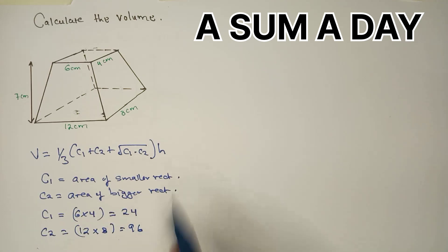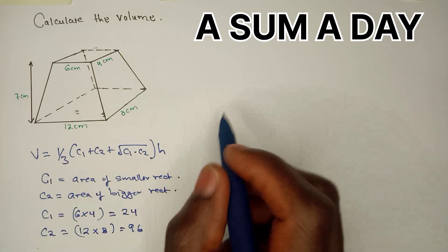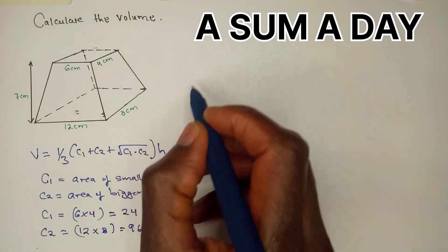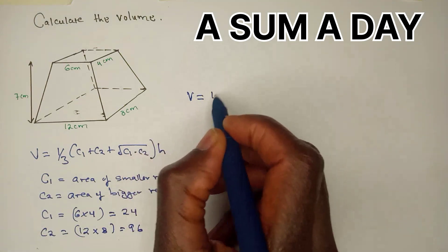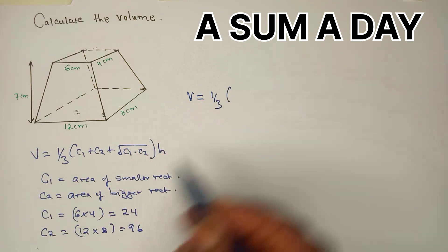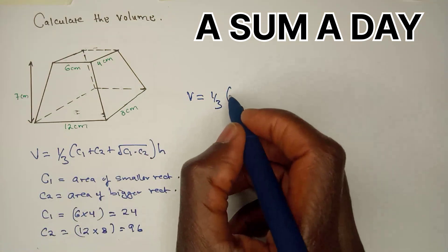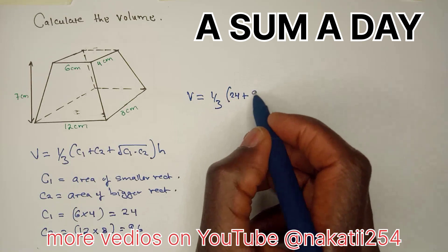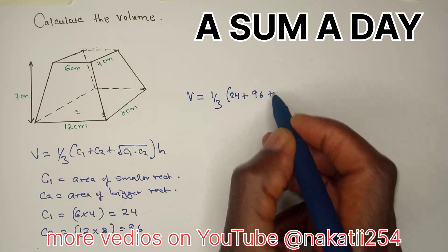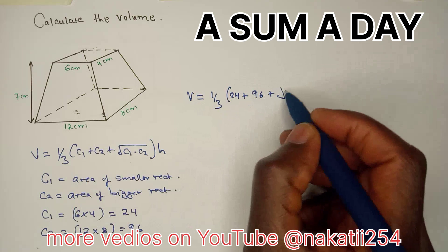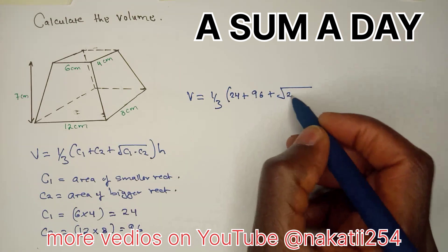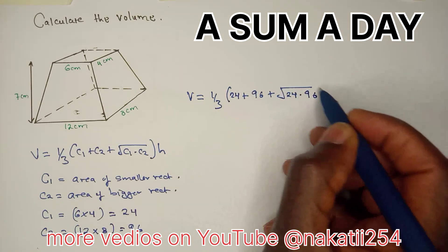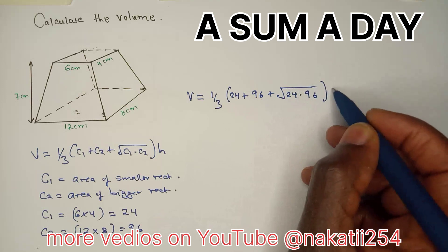Then now we can punch those values in our formula. So we can say volume is one over three into C1 is 24 plus C2 is 96 plus square root of 24 times 96 multiplied by the height which is 7.